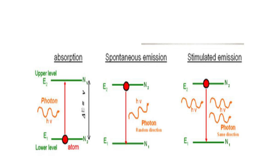As already covered in Lecture 1, the laser principles include the spontaneous absorption process, spontaneous emission process, and stimulated emission process. In the absorption process, the ground state energy level is E1 with N1 atoms, and the excited state energy level is E2 with N2 atoms. One photon of energy incident on the ground state atoms causes them to go to the excited state — that is the absorption process.